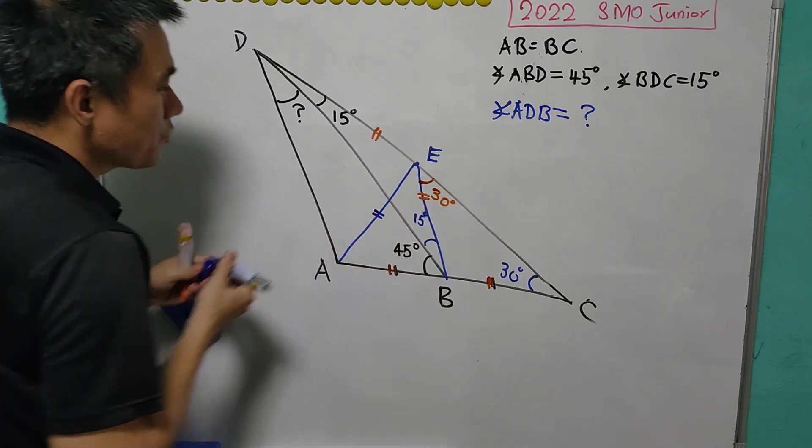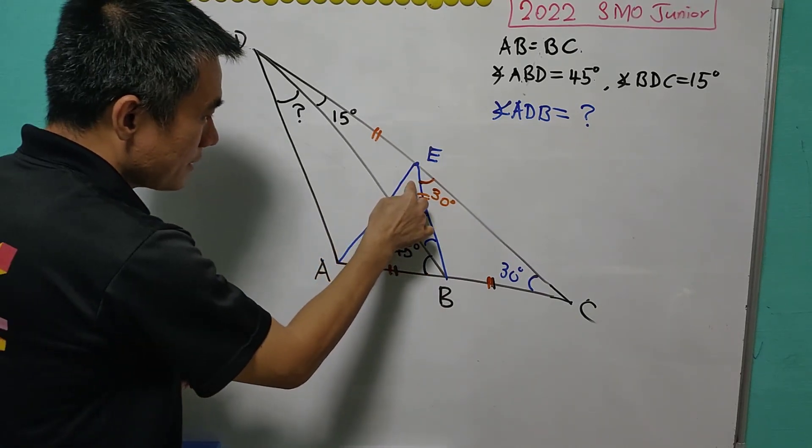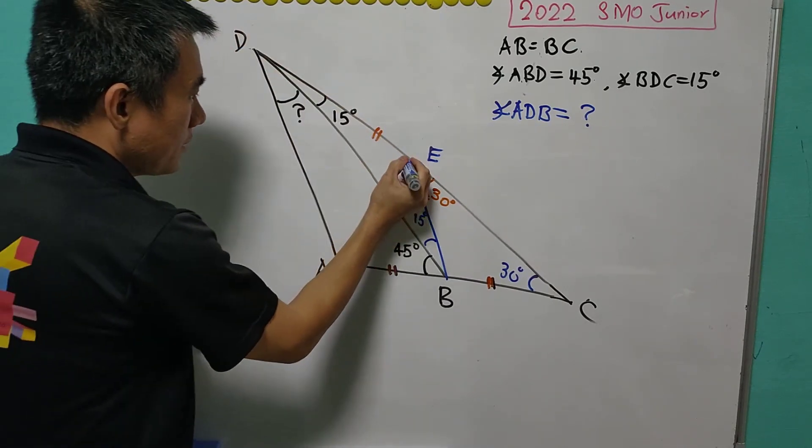So 60, 60, and 60. And since this is 60, then the angle DEA is actually a right angle.